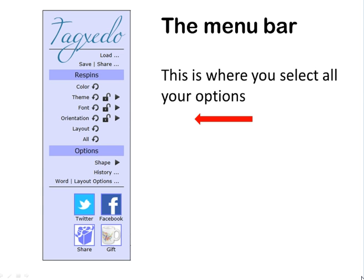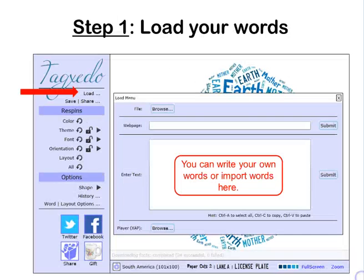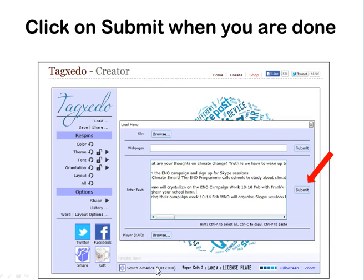You will be faced with the menu bar and this is where you will select all your different options. The first thing to do is to load your words. You can use this as a vocabulary exercise, or you can just get your class writing words or importing words, importing a poem that they have written. Click on Load and you'll see all the words; once all the words are there, click on Submit.